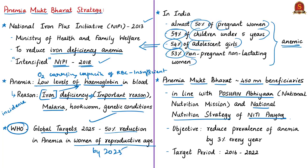Under Poshan Abhyan, India aims to reduce stunting, undernutrition, anemia and low birth weight — targeting a 2% annual reduction in stunting and undernutrition, a 3% annual reduction in anemia among young children, women and adolescent girls, and 2% annual reduction in low birth weight. The Anemia Mukt Bharat Strategy adopts the same 3% annual reduction rate for anemia. The baseline is 2015-16 data from National Family Health Survey 4.